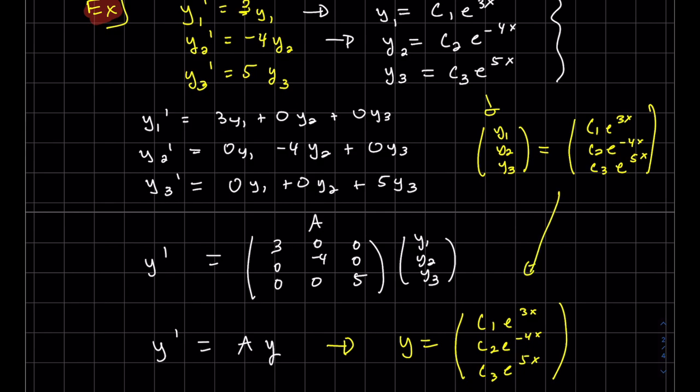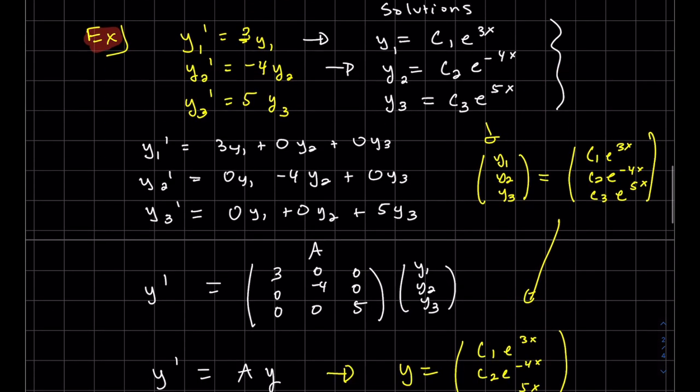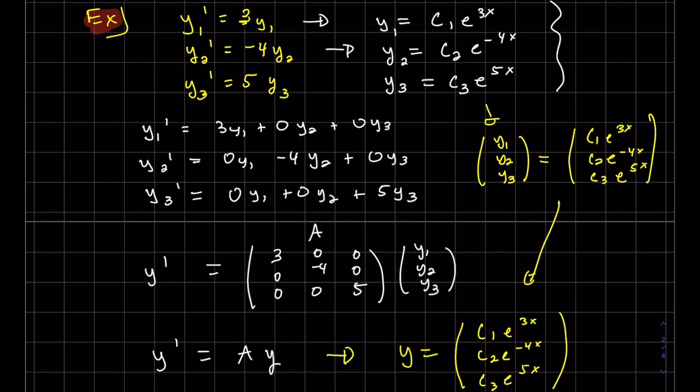So when A is actually a diagonal, those diagonals are the exponents of my e. And just a note, these x's could be t instead. It could be x or t. It doesn't matter. So that's how easy it is to solve differential equations when your A matrix is a diagonal.